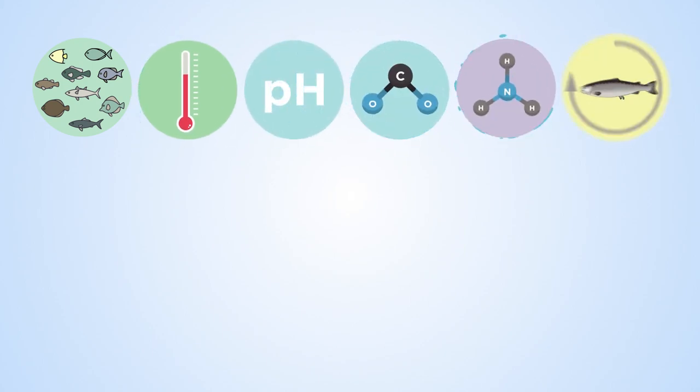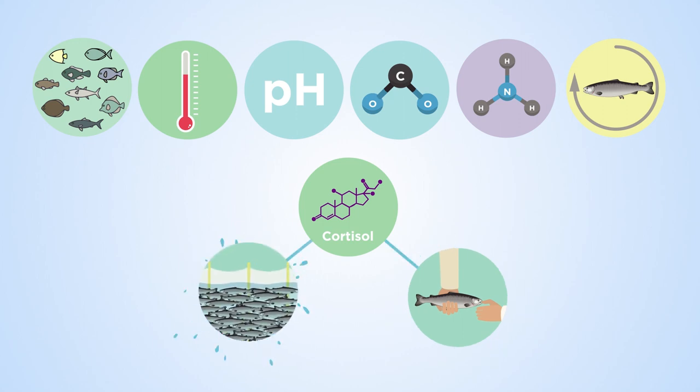These include fish species, water temperature, pH, carbon dioxide, ammonia, fish age, and handling or overcrowding.